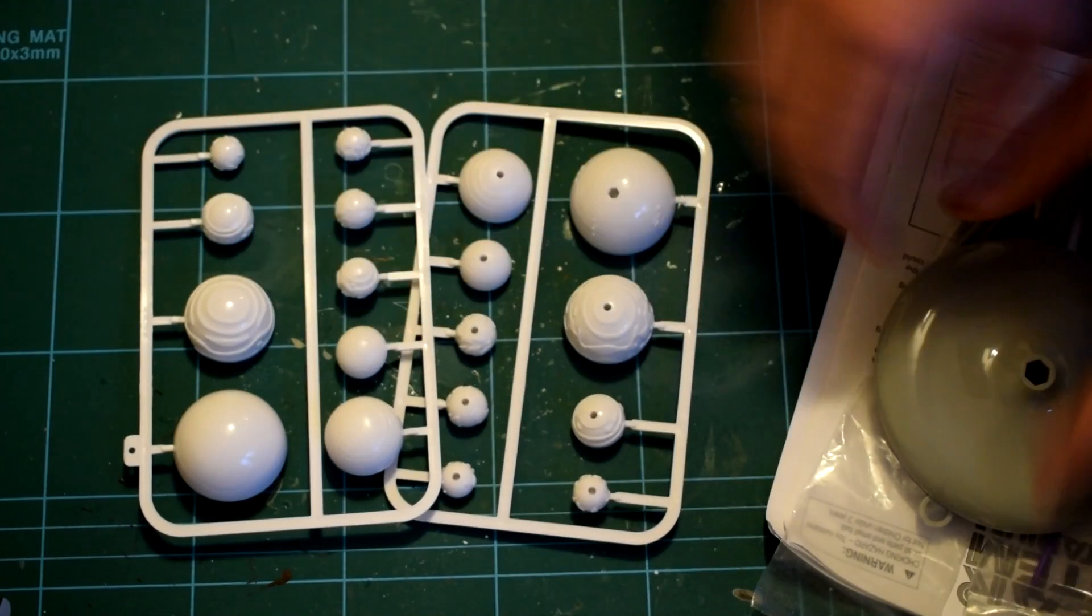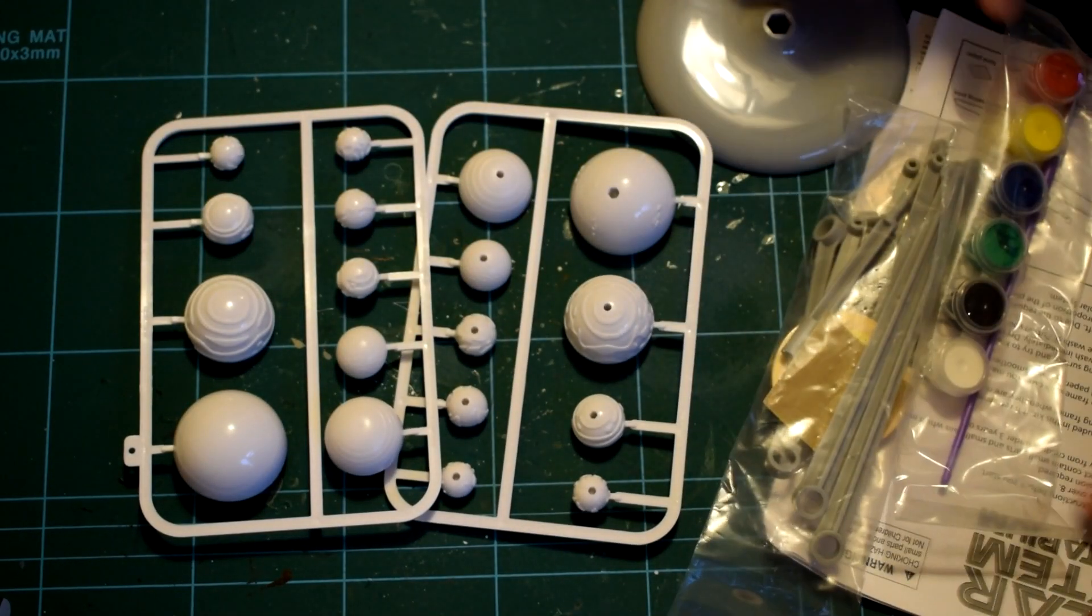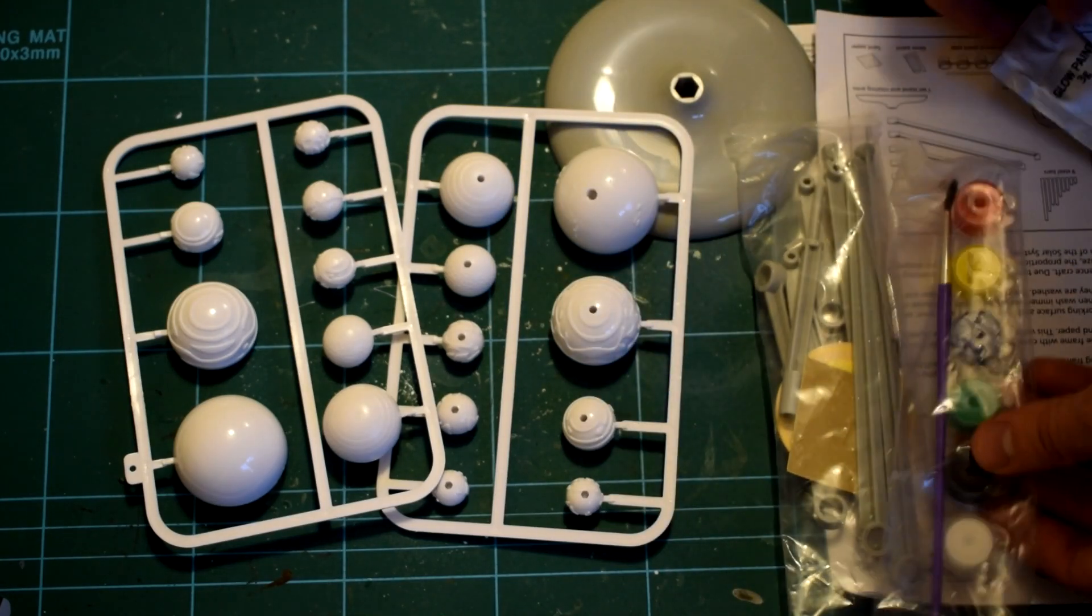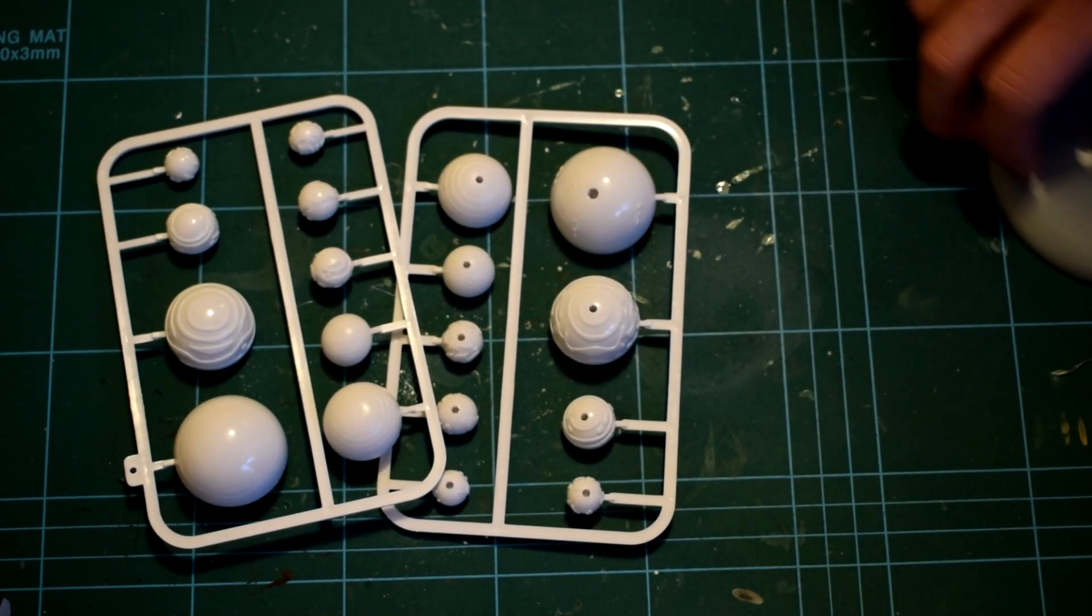Inside the box you get a bag of plastic components, metal rods, instructions, paints and a paintbrush. A small silver sachet contains some glow-in-the-dark paint.